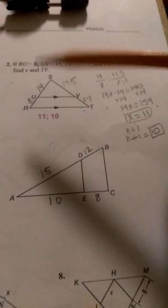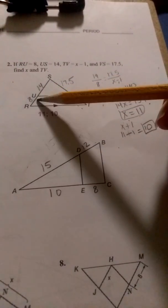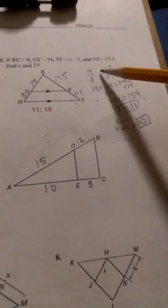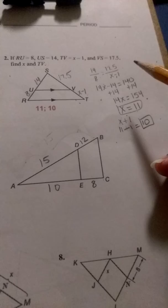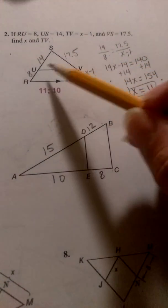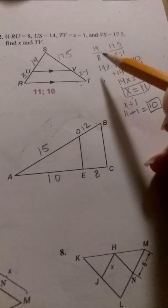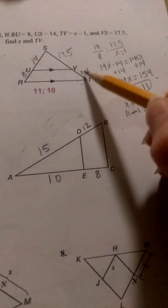Number 2, again we're given the information: US is 14, RU is 8, SV is 17.5, and then VT is X minus 1. Not only are we told to find X, we also want to find the measurement of TV. Again we compare the sides that are on the same side here, so 14 over 8 is equal to 17.5 over X minus 1.